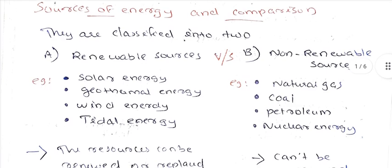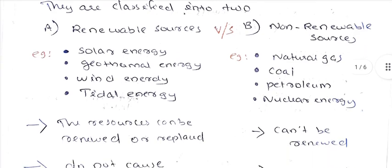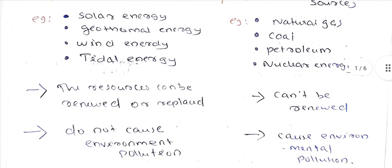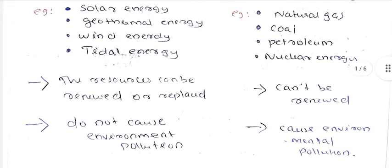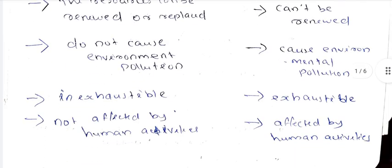In comparison: renewable resources can be renewed or replaced, while non-renewable energy sources cannot be renewed. Renewable sources do not cause environmental pollution, whereas non-renewable sources do cause environmental pollution. Renewable energy is inexhaustible, while non-renewable energy is exhaustible.